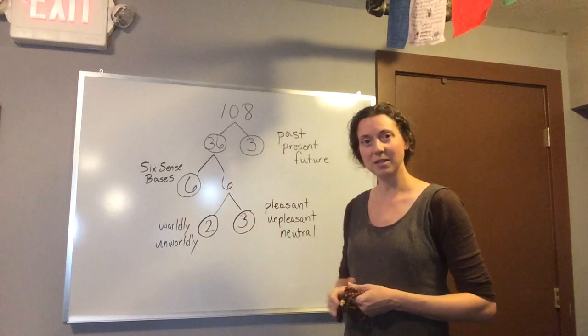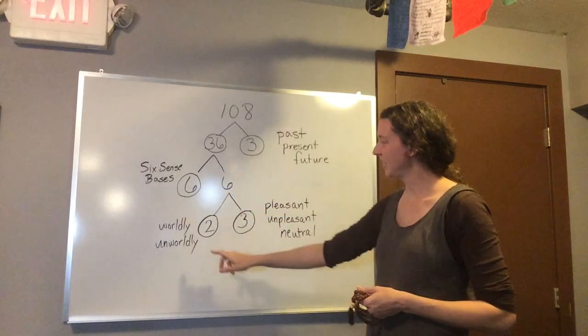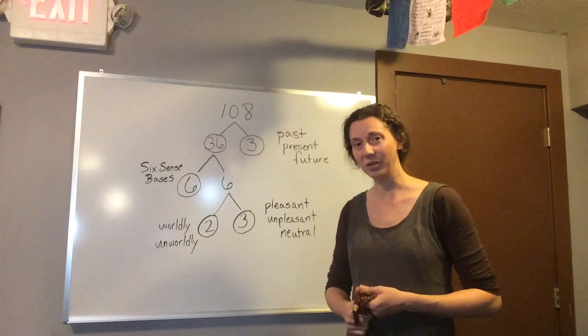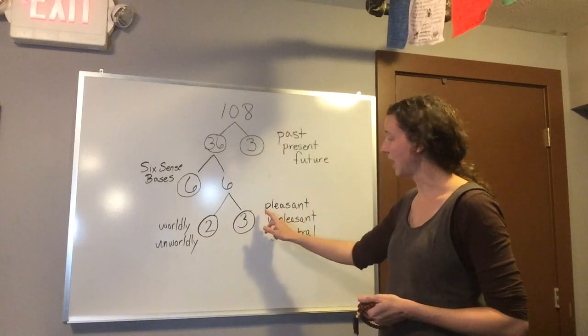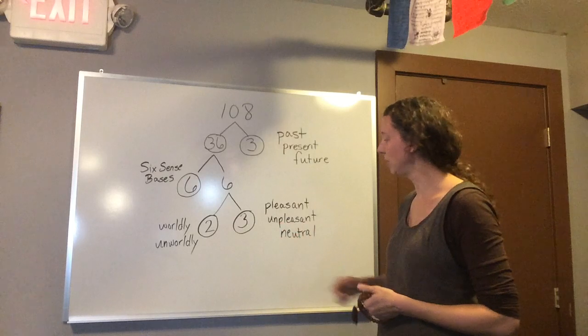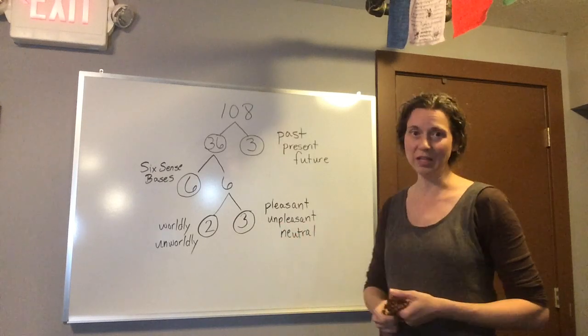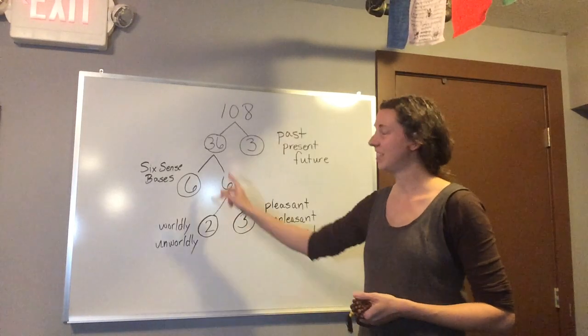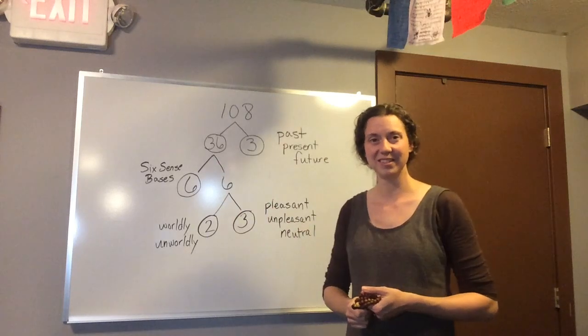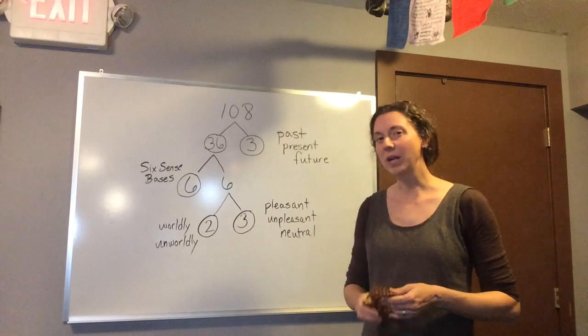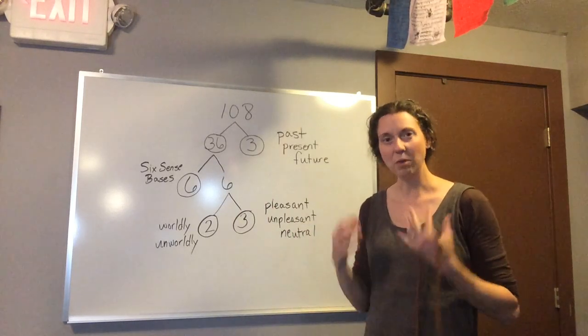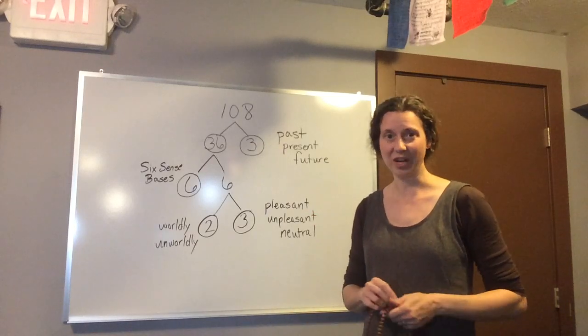Six sense spaces, times worldly and unworldly, times pleasant, unpleasant, and neutral feelings, equals 36. This is a great way to help focus our minds, and to concentrate.